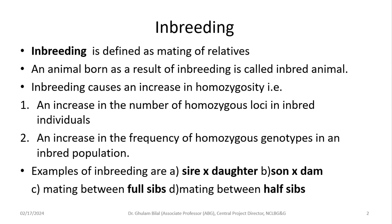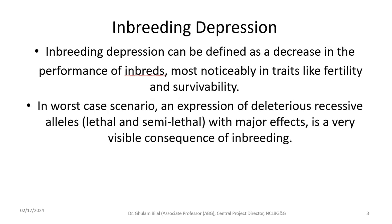Inbreeding causes an increase in homozygosity, which means an increase in the number of homozygous loci in inbred individuals. It also increases the frequency of homozygous genotypes in an inbred population. Examples of inbreeding are sire-into-daughter mating, son-into-dam mating, mating between full sibs, and mating between half sibs.